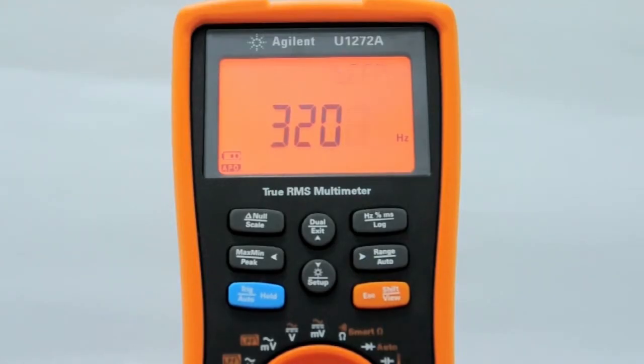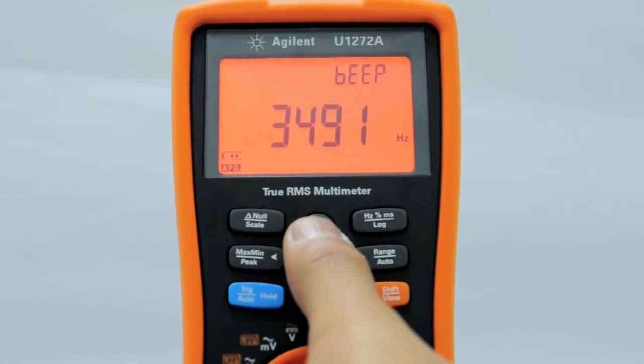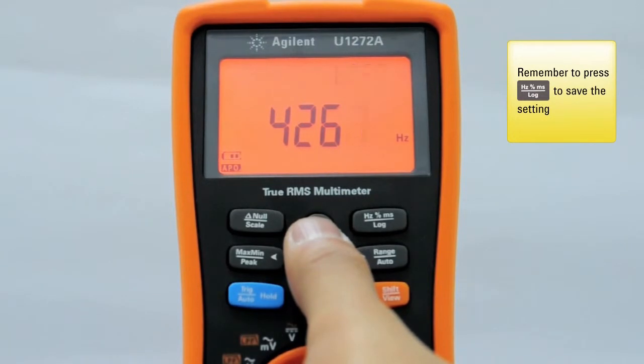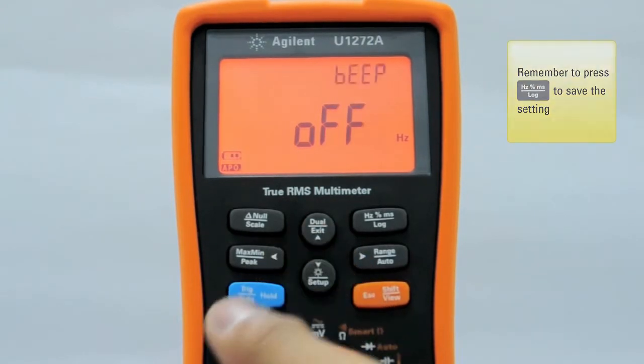You can choose four preset frequencies from the menu: 3200 Hz, 3491 Hz, 3840 Hz, and 4267 Hz. To disable the beeper feature, simply select off.